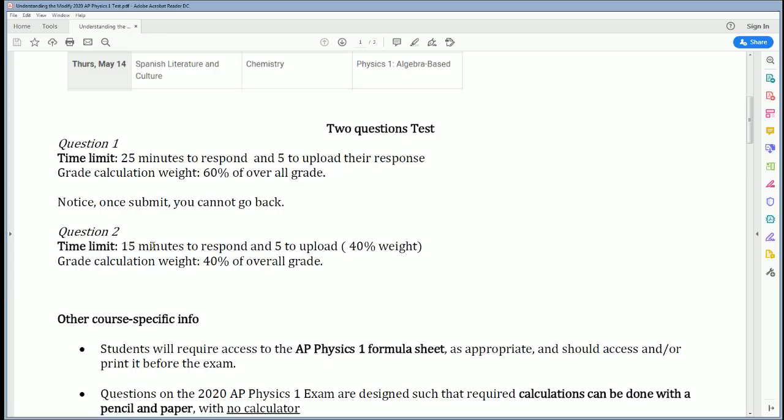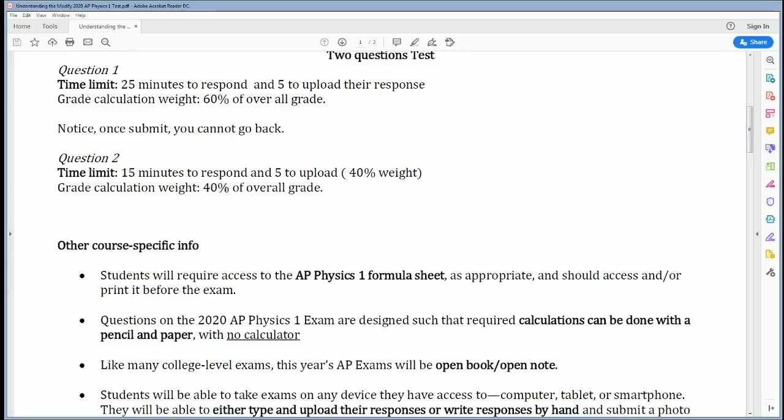Question 2 is a 15-minute response and you'll take five minutes to upload it afterwards. Its calculated weight is 40% of your overall grade. If you can just get Question 2, 40% is roughly around the cutoff for a 3.